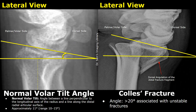The volar tilt angle is measured in a lateral view. It is the angle between a line perpendicular to the long axis of the radius and a line along the distal radio articular surface. Normally this angle is between 10 and 15 degrees. In an unstable Collis fracture this angle can be greater than 20 degrees.